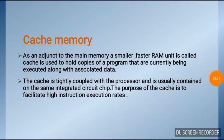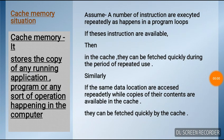Cache memory: as an adjunct to main memory, a smaller, faster RAM unit called cache is used to hold copies of programs currently being executed along with associated data. The cache is tightly coupled with the processor and is usually contained on the same integrated circuit chip. The purpose of cache is to facilitate high instruction execution rates. If instructions are executed repeatedly, as in program loops, and are available in the cache, they can be fetched quickly during the period of repeated use. Similarly, if the same data locations are accessed repeatedly and copies are available in the cache, they can be fetched quickly.